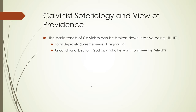Unconditional election refers to one of the more well-known tenets of Calvinism: predestination. We could think of unconditional election this way — God doesn't foresee any situations where human action might induce him to say, "I want that person to go to heaven." Rather, our salvation rests entirely on God's will. Those chosen by God to go to heaven are referred to as the elect.